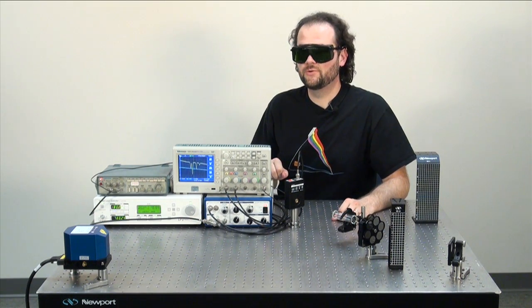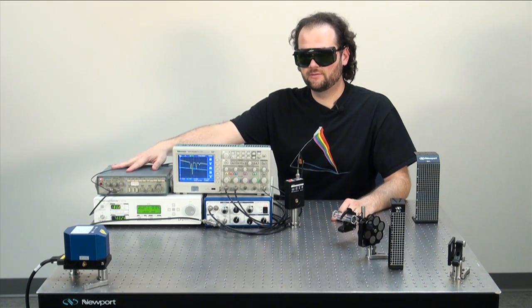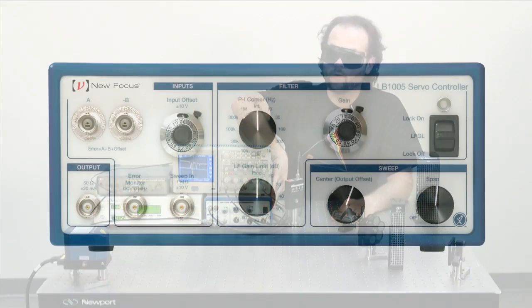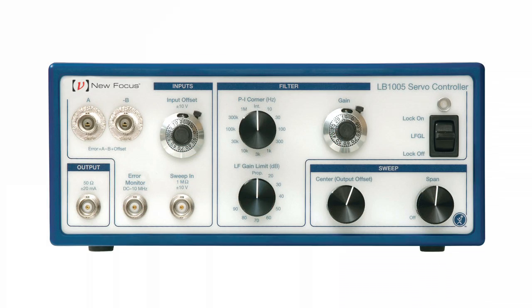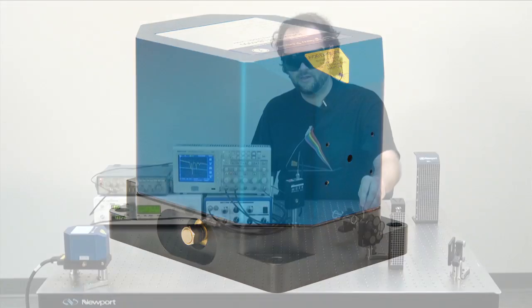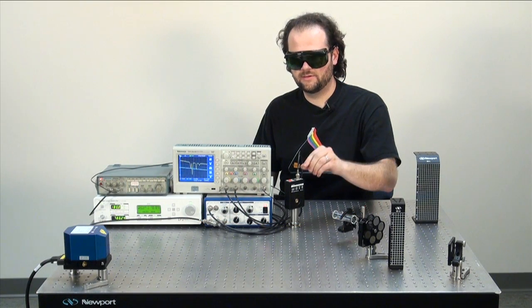For this, you will need a function generator, an oscilloscope, an LB1005 lockbox, a Vortex-2 laser, a rubidium gas cell, and a detector.